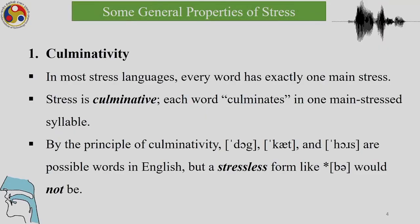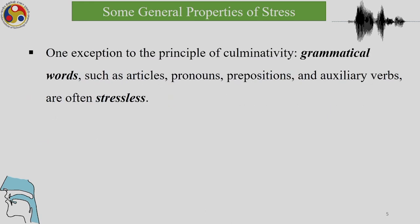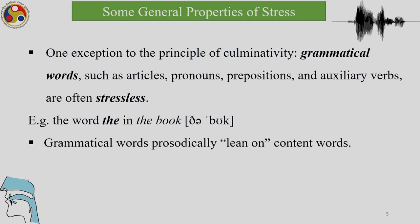By the principle of culminativity, monosyllabic words like 'dog', 'cat', and 'horse' are possible words in English, but a stressless form would not be a possible word in English. One exception to the principle of culminativity: grammatical words such as articles, pronouns, prepositions, and auxiliary verbs are often stressless. For example, the word 'the' in the noun phrase 'the book'. Grammatical words prosodically lean on content words.